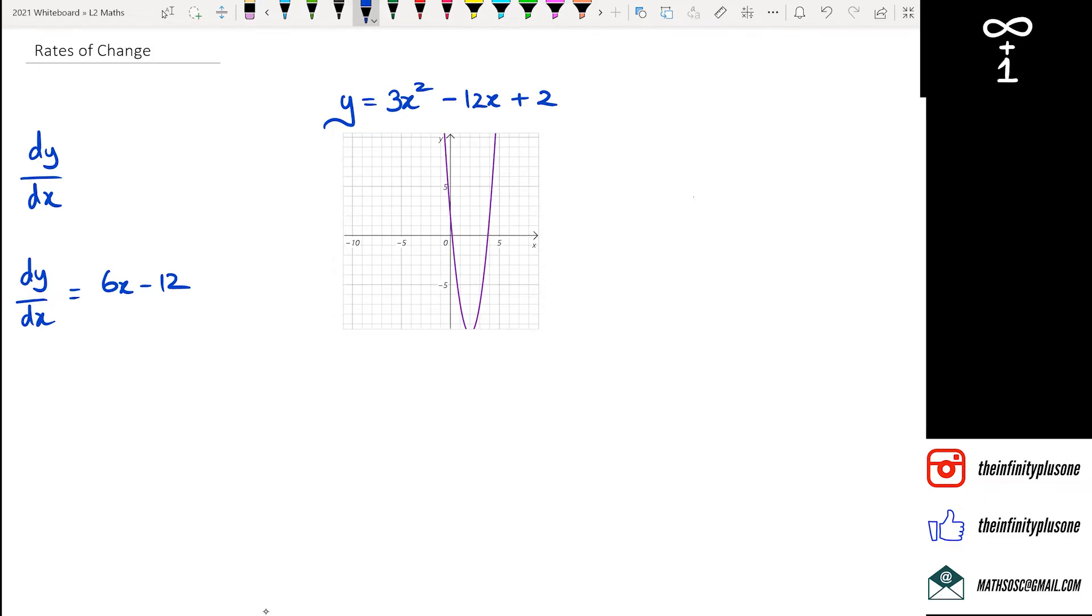If I want to find the rate of change for this particular graph at the point when x equals 1, then all I need to do is substitute x equals 1 in the gradient function. So dy/dx is equal to 6 times 1 minus 12, which is going to give me negative 12.